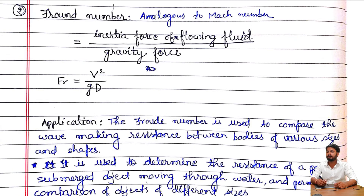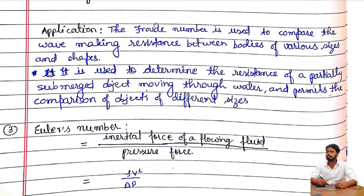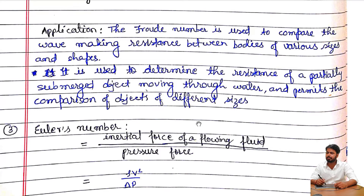The Froude number is analogous to the Mach number. It is defined as inertial force of a flowing fluid divided by gravitational force. The Froude number equals v²/(gd). Its application is that it is used to compare wave-making resistance between bodies of various sizes and shapes, and to determine the resistance of a partially submerged object moving through water.